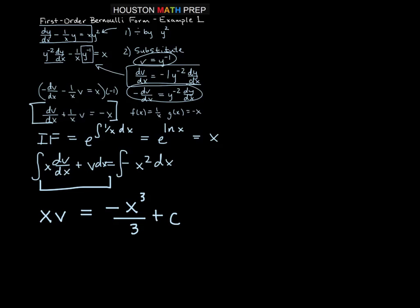We'll then go ahead and divide both sides by x, so that gives us v is equal to negative 1 third x squared plus c over x.